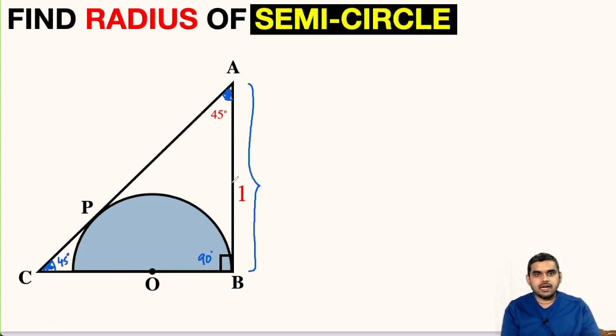So this is an isosceles triangle. That means AB will be equal to BC. AB is given to us as one unit, so BC will also be one unit. This entire length is one unit.